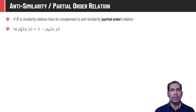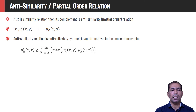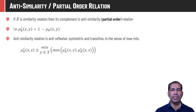If R̄ is a similarity relation, then the complement of that will represent an anti-similar relation. The membership value of tuple (x, y) in μ_R̄_complement equals 1 minus the membership value of the same tuple in R̄. Or in other words, a relation is anti-similar if it is anti-reflexive, symmetric, and transitive. In max-min form, μ_R̄_complement(x, z) is always ≥ min(max(μ_R̄_complement(x, y)), μ_R̄_complement(y, z)).